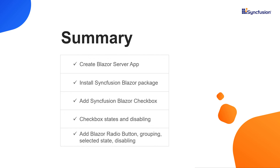Then I showed you how to add the Syncfusion Blazor checkbox component to the Blazor server application, and explained how to show a checkbox in checked and intermediate states and disable the checkbox. Finally, I created a radio button, explained how to group radio buttons, showed a radio button in a selected state, and explained how to disable a radio button. You can download this working example from the GitHub link in the video description below. You can also see about getting a free license key to use our Blazor products if you are eligible for our community license. If you found this video useful, click the like button and subscribe to our channel to get notifications about new videos. Thanks for watching.